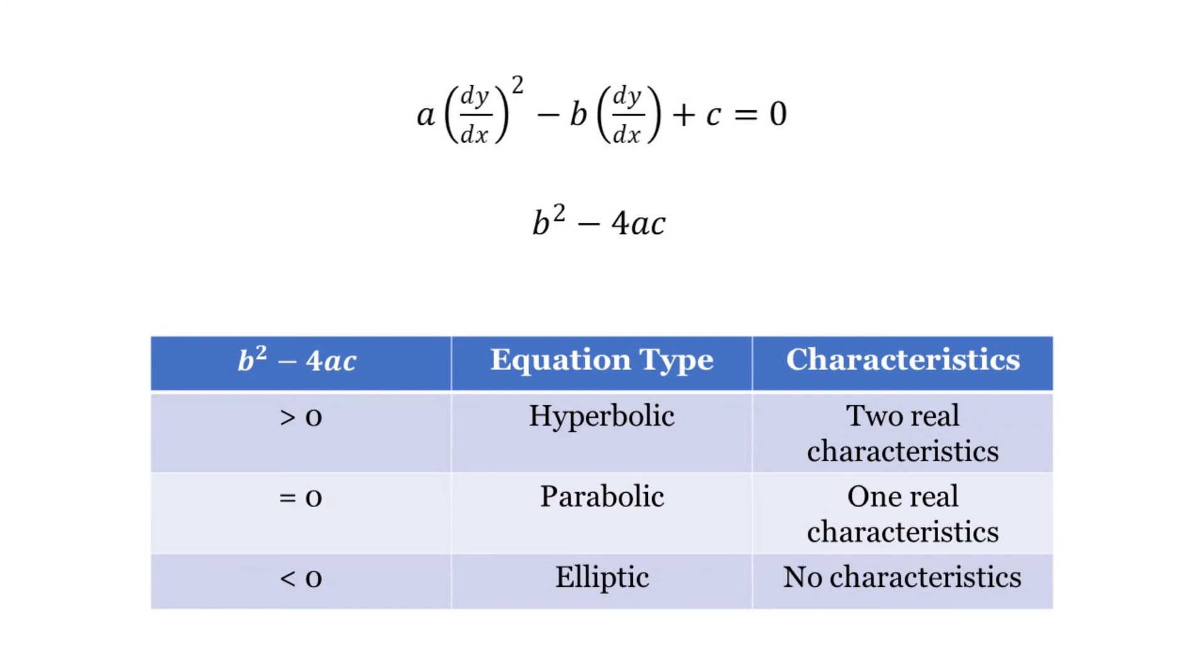If this value is greater than 0, the equation is hyperbolic. If the value is equal to 0, the equation is parabolic. Finally, if the value is less than 0, the equation is elliptic. This procedure can be generalized to equations which rely on n variables. This will be covered in an upcoming video.